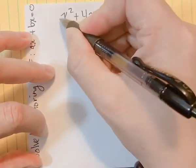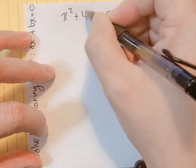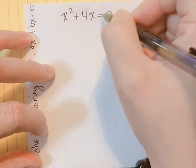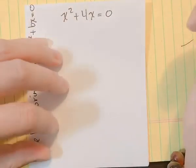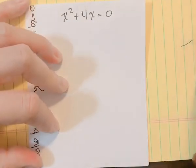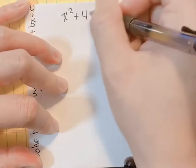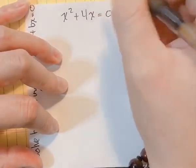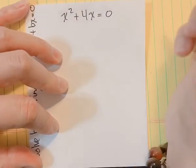Notice your A is right here, which is 1, your B is 4, and your C is not there. Your C is a zero, actually, but we're not writing that down. The B term is always the X term, and the A term is always the X squared term.